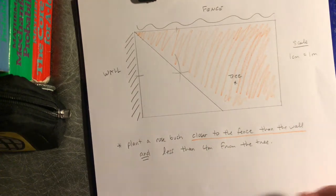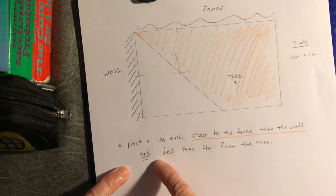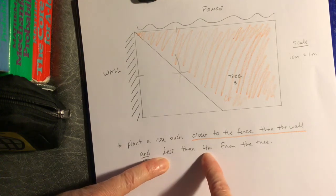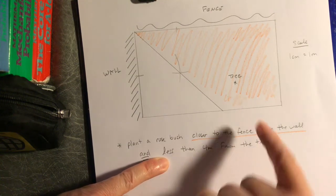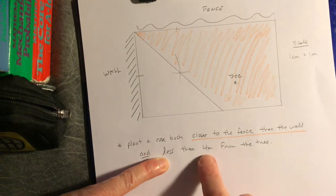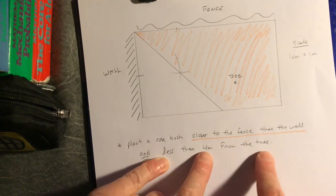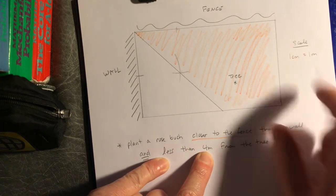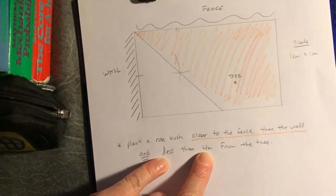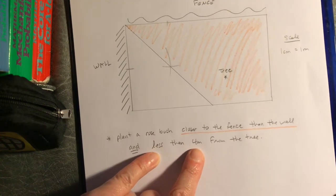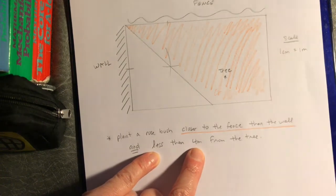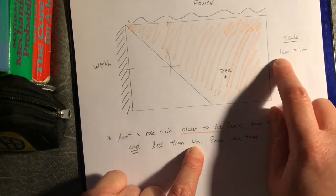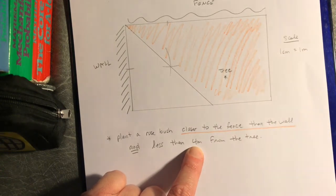Now let's go to our second condition: we want to be less than four meters from the tree. Here's my tree. Four meters from the tree — that's going to be four centimeters on my map. This is a really nice scale; I don't have to think very hard. The numbers are the same between the units, so four meters in real life is four centimeters on my map.